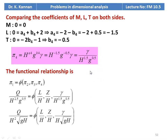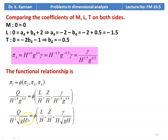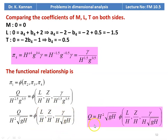The functional relationship: q / (h²·⁵ · g⁰·⁵) = phi(l/h, z/h, gamma/(h¹·⁵ · g⁰·⁵)). Rewriting: q / (h² · √(gh)) = phi(l/h, z/h, gamma/(h·√(gh))). Therefore the final expression: q = h² · √(gh) · phi(l/h, z/h, gamma/(h·√(gh))).